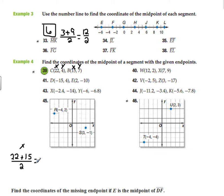So 22 plus 15 divided by 2 is 37 divided by 2, which equals 18.5. That's my x.